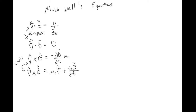In words, what these equations are telling you is that you can get an electric field by having some kind of charge density. There's no way to get a magnetic field from a point source, so this is basically telling you that there are no magnetic monopoles — which I talked about earlier. If you find a magnetic monopole, you win a Nobel Prize.